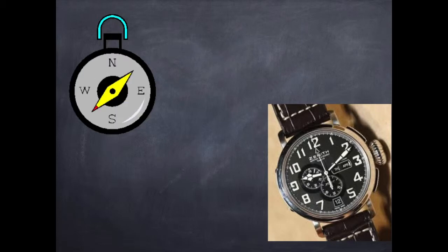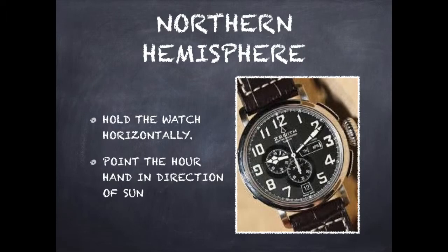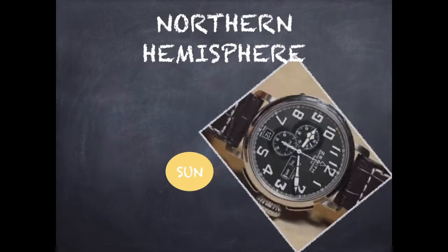Firstly, I'll be telling you about the Northern Hemisphere. In case of Northern Hemisphere, what you need to do is hold the watch horizontally, then point the hour hand directly at the Sun in this manner.